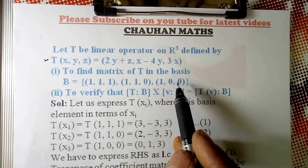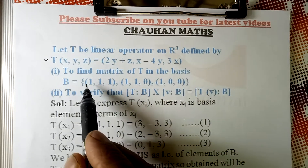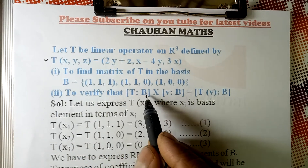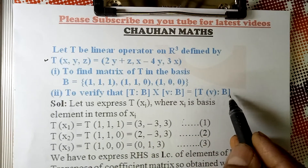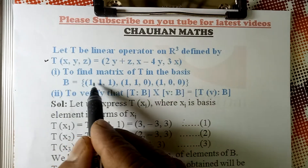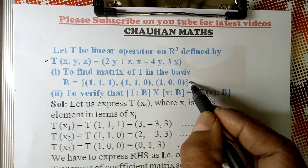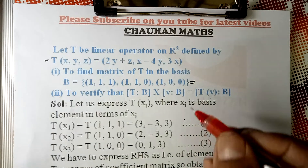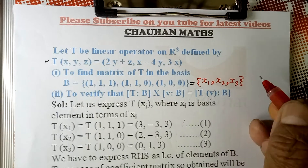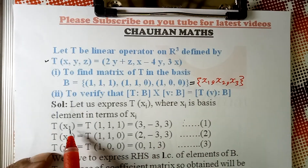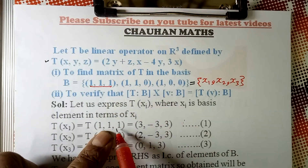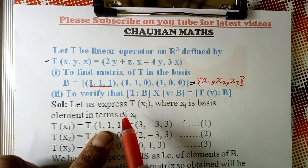In the previous example, it was the standard basis. In this example, it is not standard basis. We also need to find the matrix of T relative to basis B, and then do a verification: T_B times V_B equals TV_B. For this type of question, we find T of each element of the basis. Label the basis elements as x1, x2, x3. Now find T of x1, which means T of (1,1,1). We have written that element as x1.